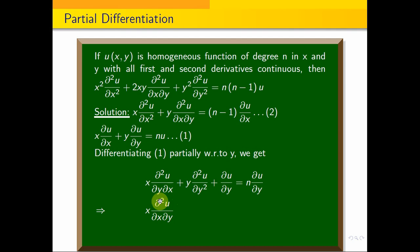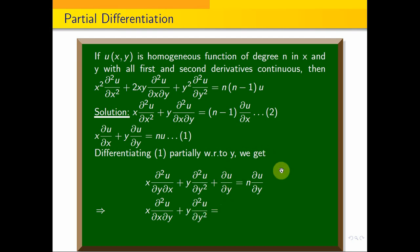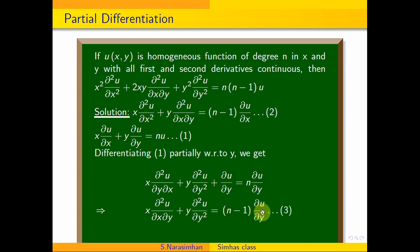Rearranging: x·∂²u/∂y∂x plus y·∂²u/∂y² equals (n−1)·∂u/∂y. This is equation 3.